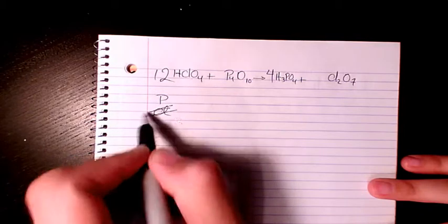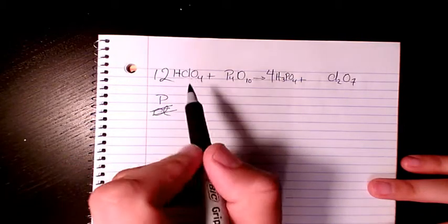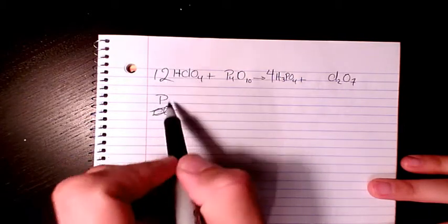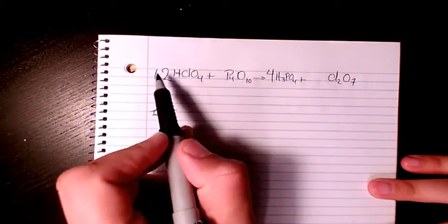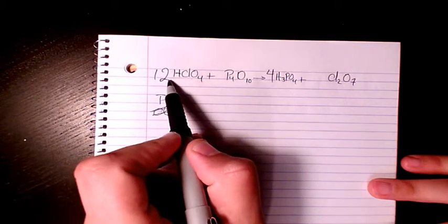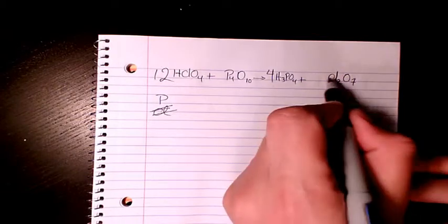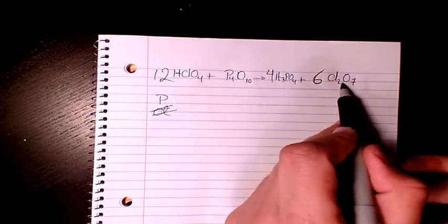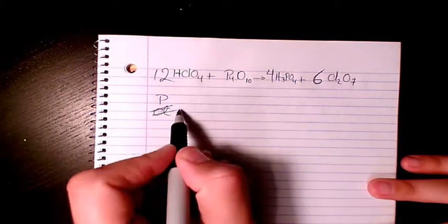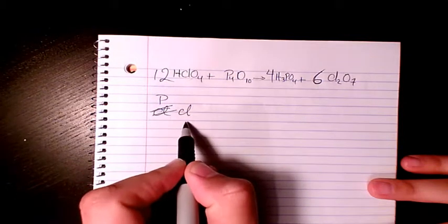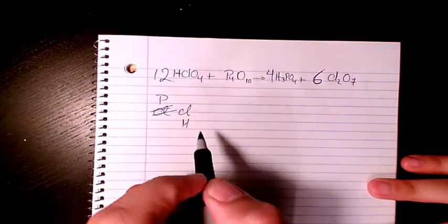So as you see here, chlorine is not balanced anymore. Then let's go back and check the chlorine. Chlorine, we have 12 of them now and we have two here, so we need to put six here. Six times two, 12, so chlorine is balanced again. Hydrogen is balanced.